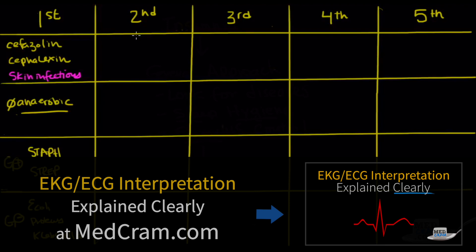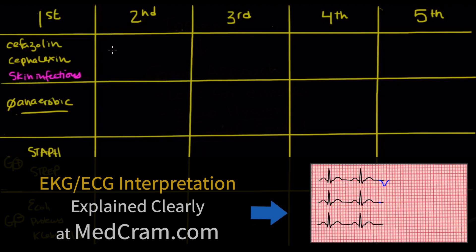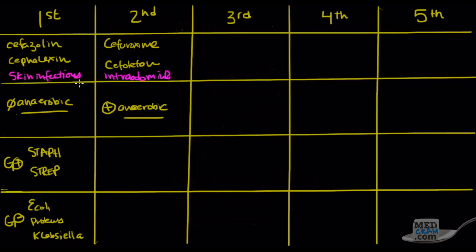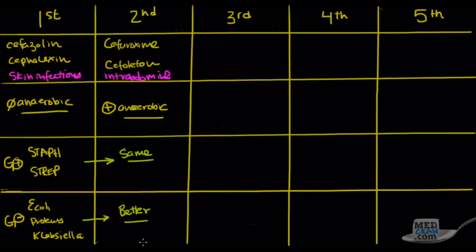Moving to second generation cephalosporins, here we're talking about medications like cefuroxime and cefotetan. The biggest thing about this generation was that now we had anaerobic coverage. As a result, we're now looking at intra-abdominal infections. There's a lot of anaerobic bacteria intra-abdominally. The staph and strep coverage stayed the same going from first to second generation. Going from first to second, we also got a little bit better gram-negative coverage, which made it really useful for intra-abdominal infections.